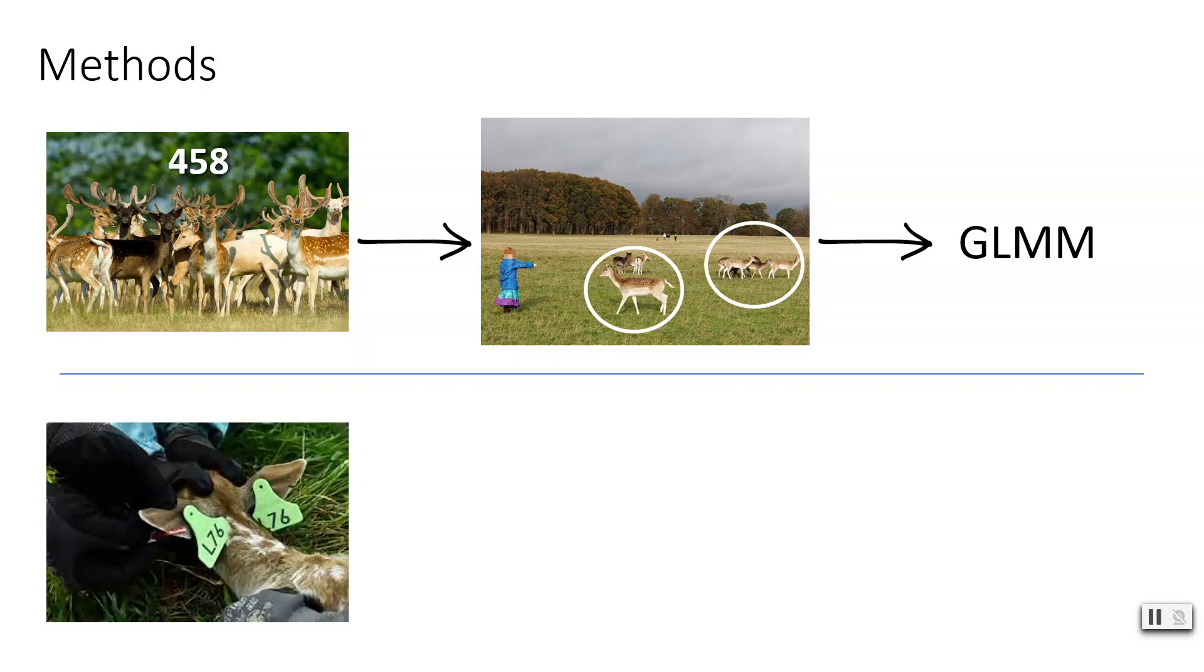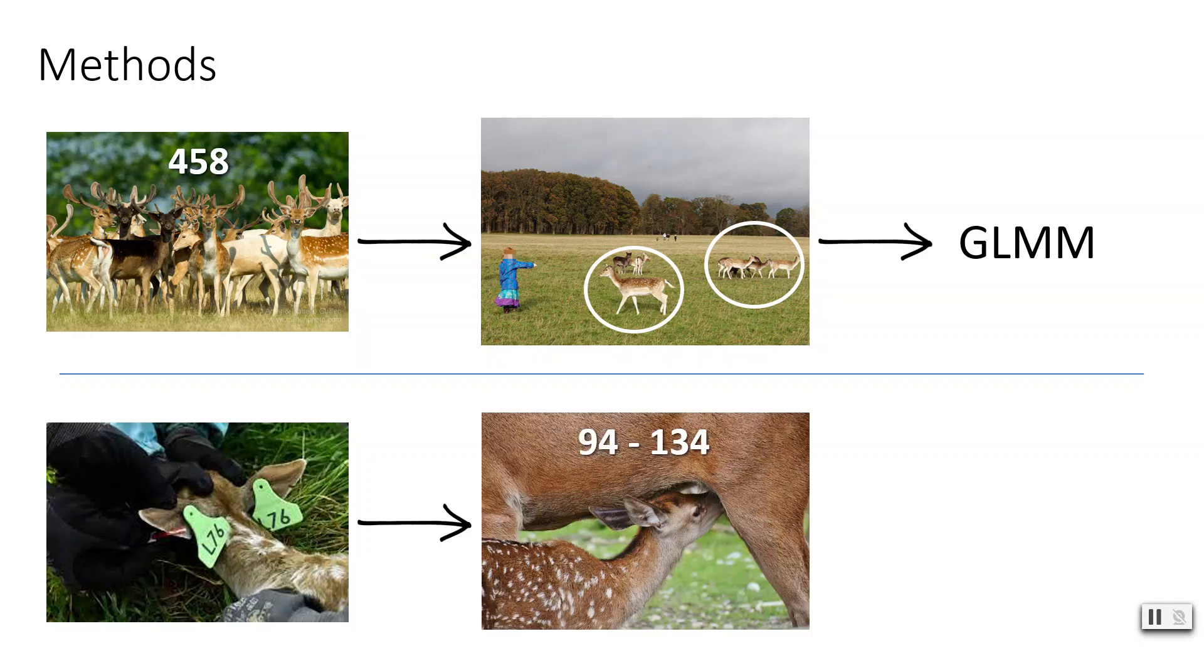Simultaneously, in June of each year we captured, tagged and weighed newborn fawns. We then performed behavioural observations to pair these offspring with their mothers by tracking repeat observations of mother behaviours such as suckling or grooming. In total, we paired 94 mothers with 134 fawns over 3 years. We then built a linear mixed effect model using fawn birth weight as the response to determine if mother begging behaviour had an effect.